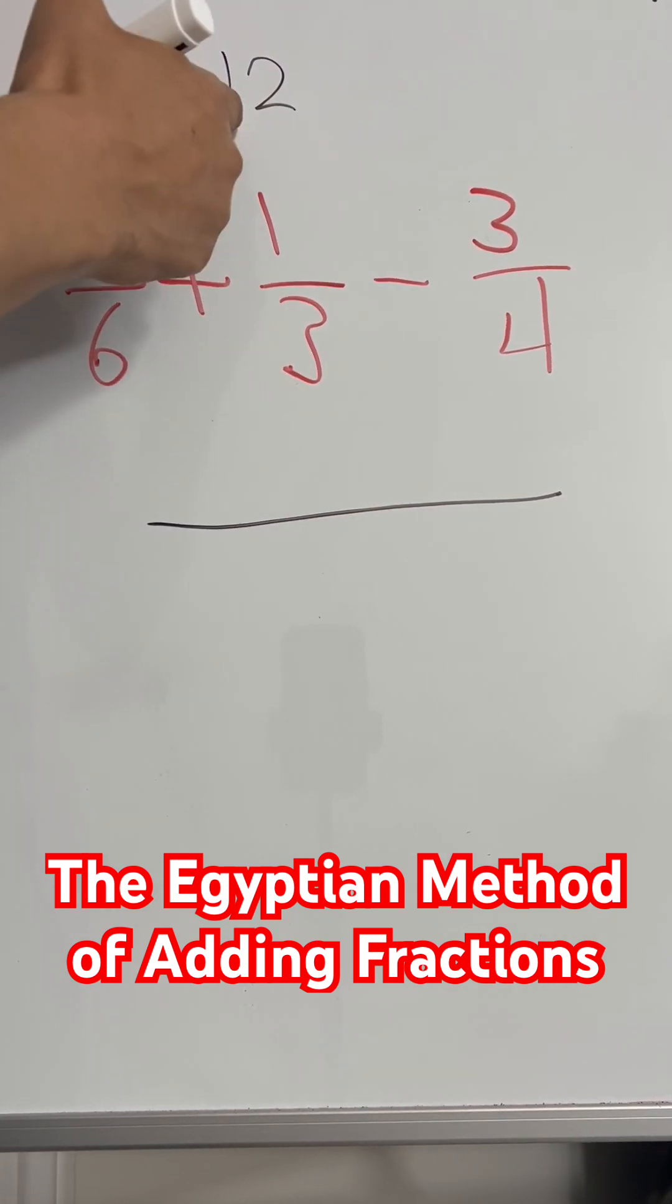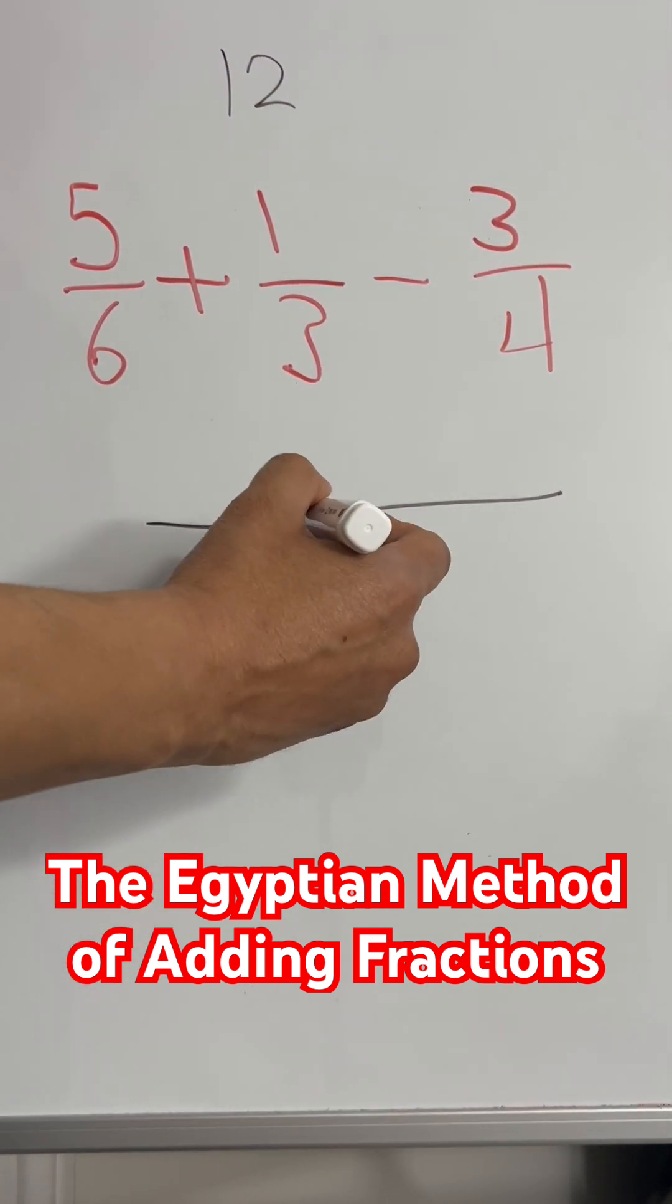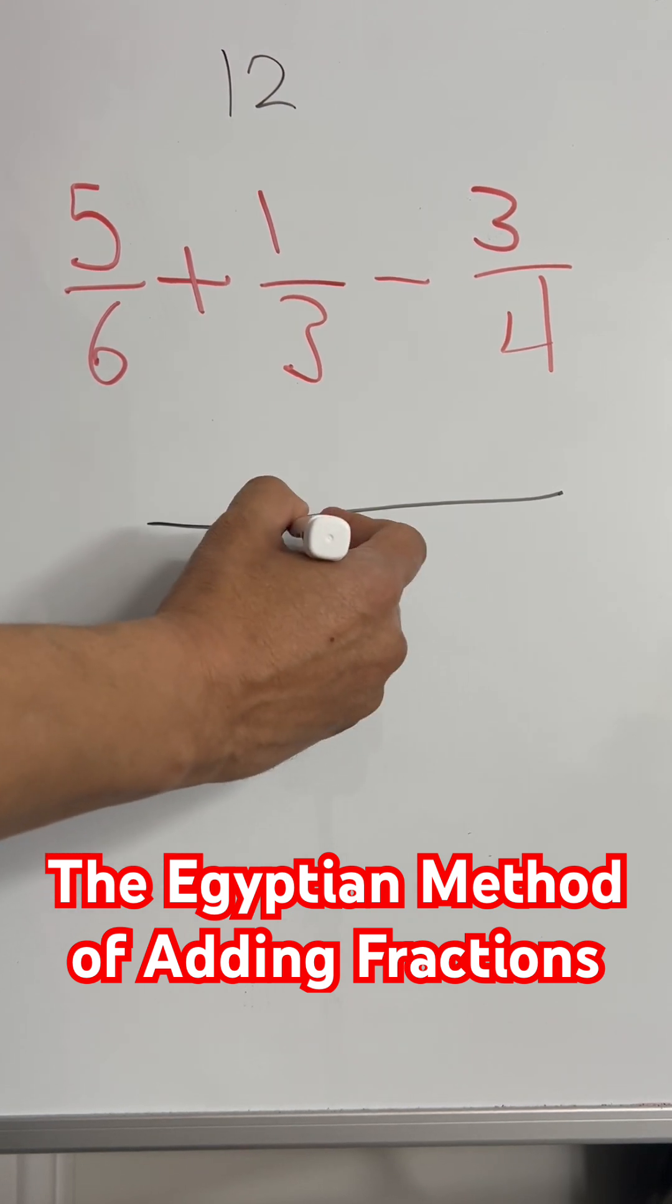Does 4 go into 12? Does 3 go into 12? Yes, both of them go into 12. Therefore, 12 is your common denominator.